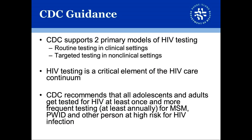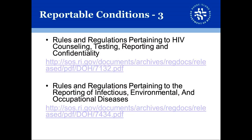CDC recommends that all adolescents and adults get tested for HIV at least once in their life, and more frequently if they are a high-risk population, such as men who have sex with men or people who inject drugs. HIV rapid testing is an important strategy to identify and target those individuals and ensure that if they are at risk or infected, they know their status, so they can engage with the other elements of the care continuum, such as being in care, being on medication, and achieving viral suppression. Two links are provided here to the two applicable rules and regulations — one pertaining specifically to HIV and another covering the reporting of infectious diseases including HIV, STDs, and hepatitis.